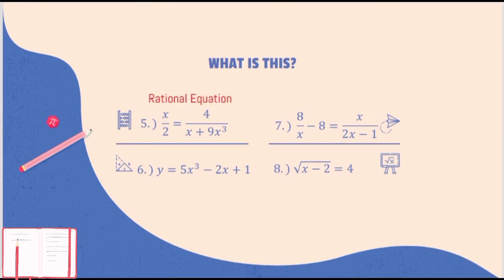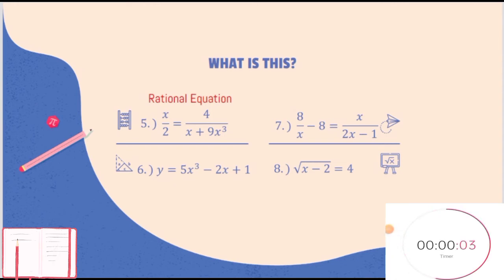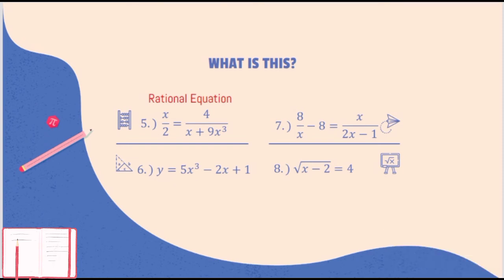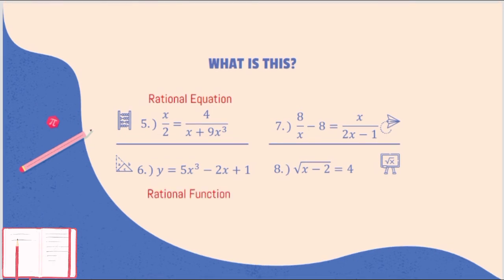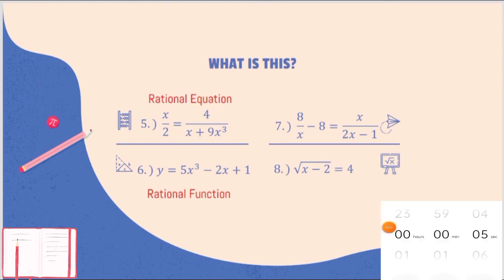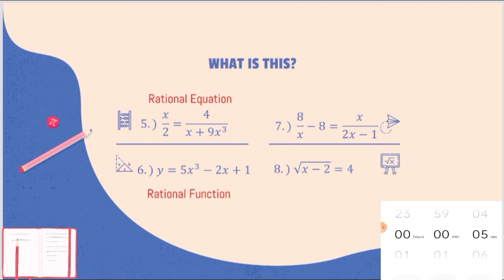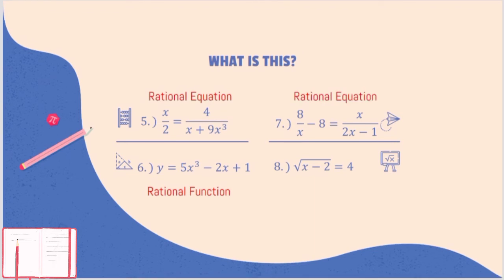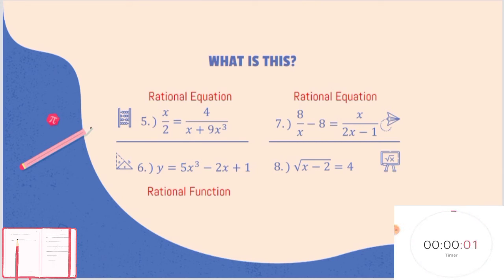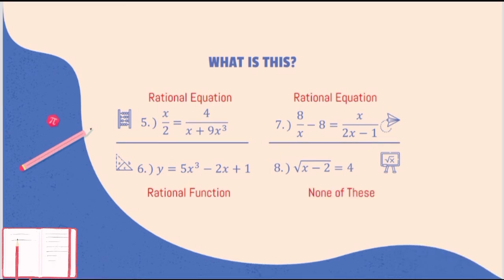How about number 6? Since there is another variable y here, it could also be f(x). Therefore, this is a rational function. We are now on number 7. This is a rational equation. How about number 8? Number 8 is none of these, because this is a radical equation.